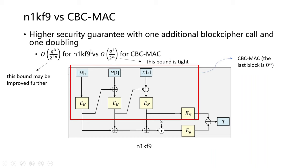The bound of n1kf9 is beyond-birthday-bound and may be improved further, while the bound for CBC-MAC is only birthday-bound. That bound is tight, so there is no room to improve it further.